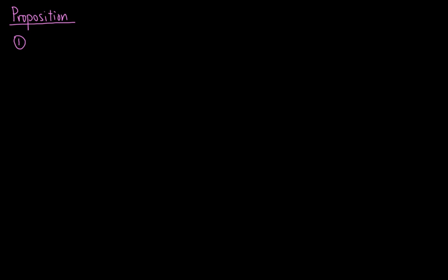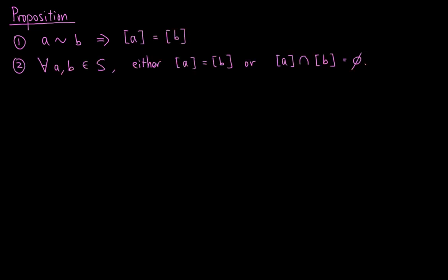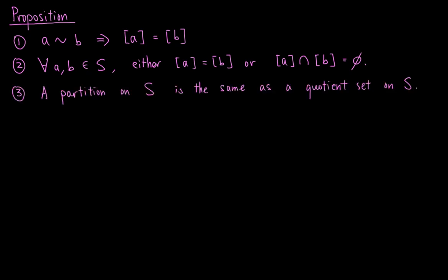Let's give some useful results regarding equivalence classes. Firstly, if A is related to B, then their equivalence classes are the same. Secondly, for all elements A and B in S, either their equivalence classes are the same or they are disjoint. Thirdly, a partition on S is the same as a quotient set on S.